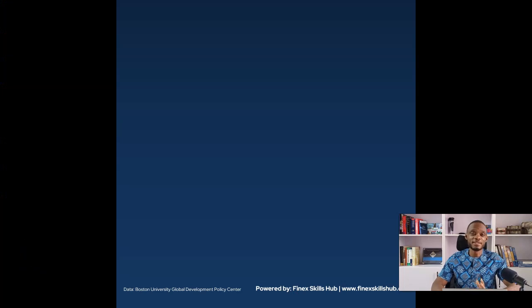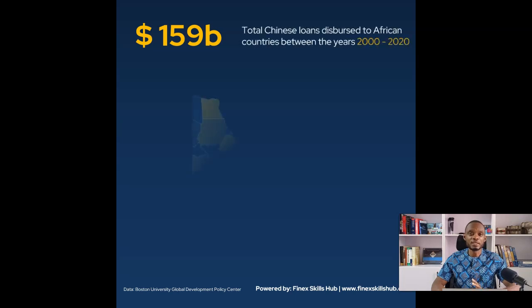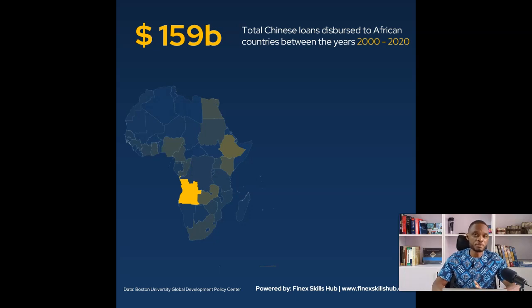In the late 1990s and early 2000s, China began forging ties with African countries. It wasn't long before China became a dominant and significant lender to the continent. In the last 20 years, Chinese banks have offered loans to African countries for major infrastructural works including rails, ports, roads, etc. In this period, a total of 159 billion dollars has been dispersed to African countries. Looking at the map, you realize that most if not all African countries have benefited from Chinese loans.